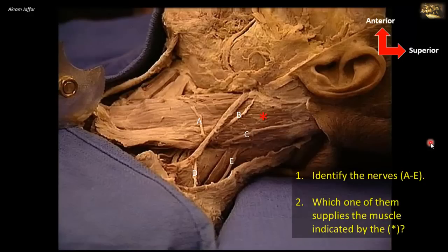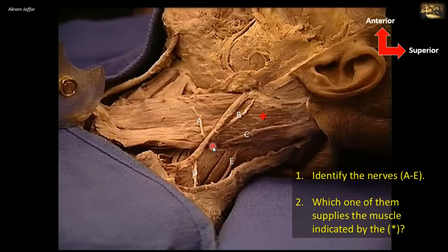Identify the nerves A to E, and which one supplies the muscle indicated by the star. The area is on the side of the neck, posterior to the sternocleidomastoid muscle. Nerves A, B, C, and D arise from behind the sternocleidomastoid — they are the cutaneous branches of the cervical plexus, formed from anterior primary rami of spinal nerves C1 to C4. A is the transverse cervical nerve, supplying the skin over the middle part of the neck. B, the great auricular nerve, ascends toward the angle of the mandible and supplies the skin over the angle of the mandible and the parotid gland — the only part of the face not supplied by the trigeminal nerve.